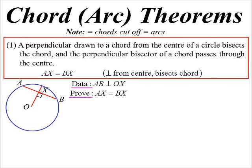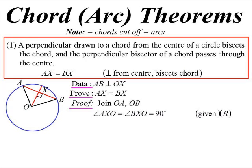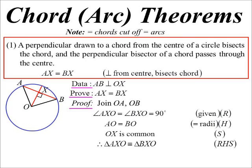We're going to prove they are equal using congruent triangles. I'll draw in OA and OB to create two triangles. Angles AXO and BXO are both 90 degrees (given). OA and OB are both radii, and OX is common. So by right-angle-hypotenuse-side, the triangles are congruent. Therefore, AX and BX are matching sides in congruent triangles.